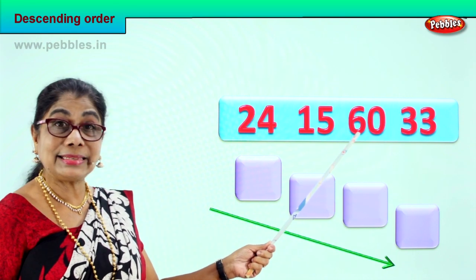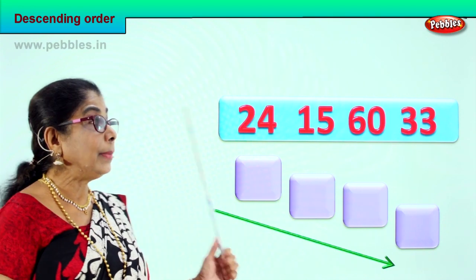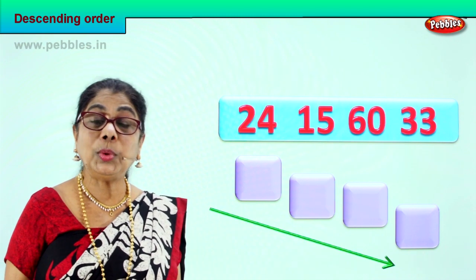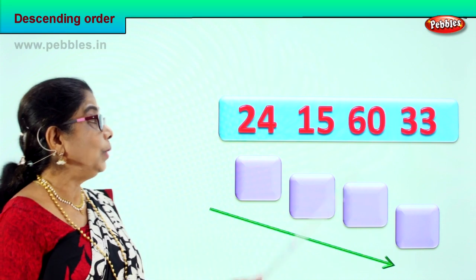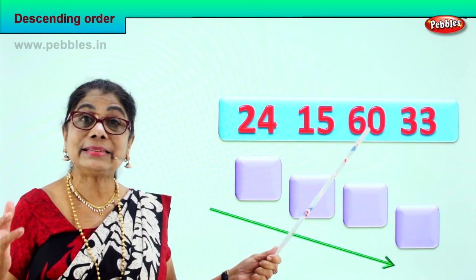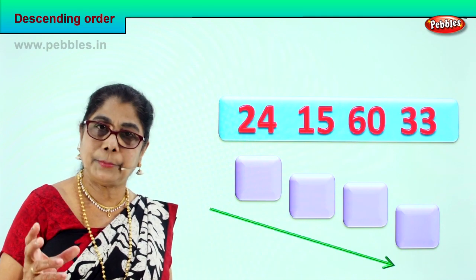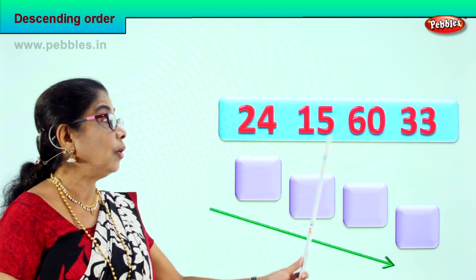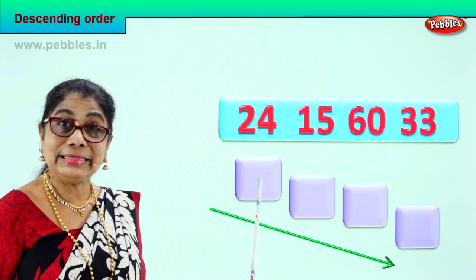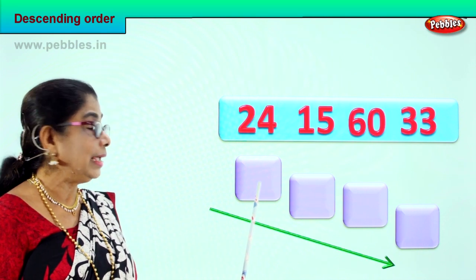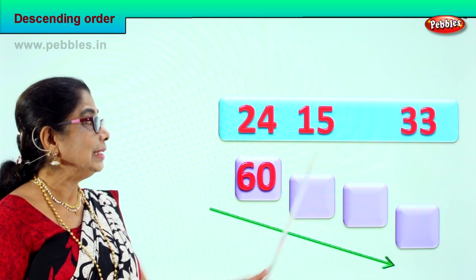So we have three tens, six tens, one ten, two tens. Among all these, which number has the highest number of tens? We have sixty — six tens. That's the biggest number. We are doing descending order, so we need to put the biggest number here. Six tens, zero ones — we take it and put it on the top.